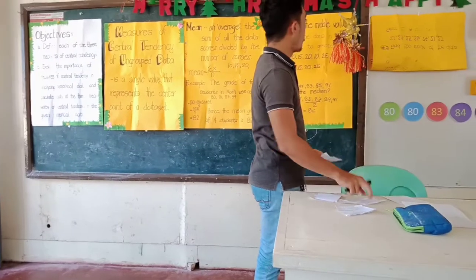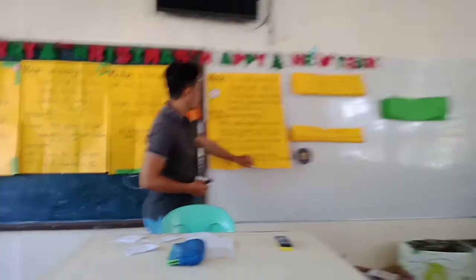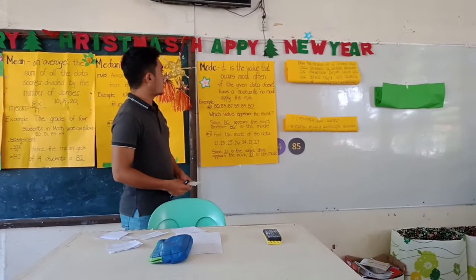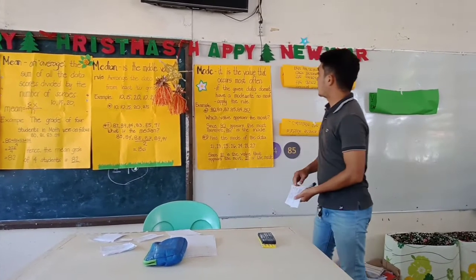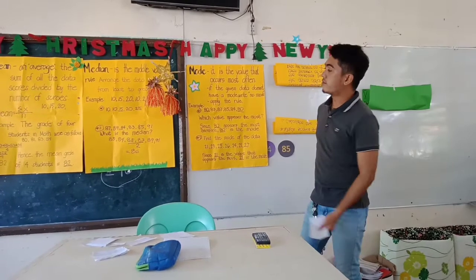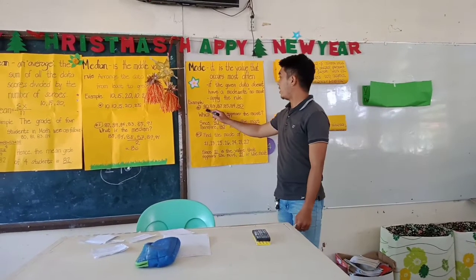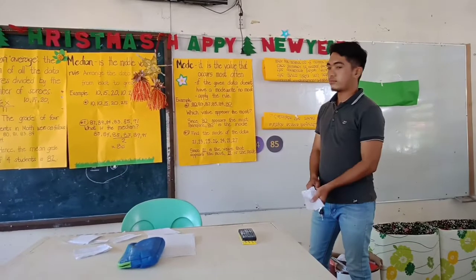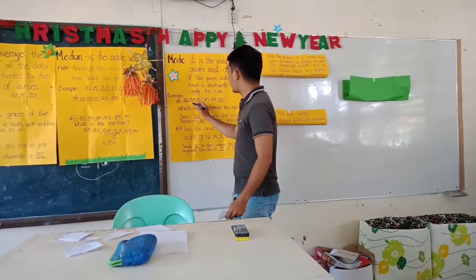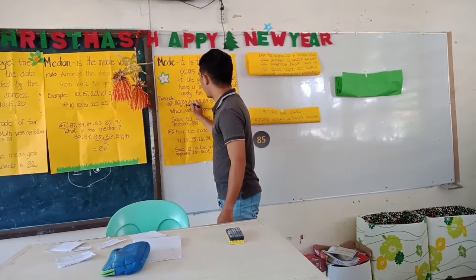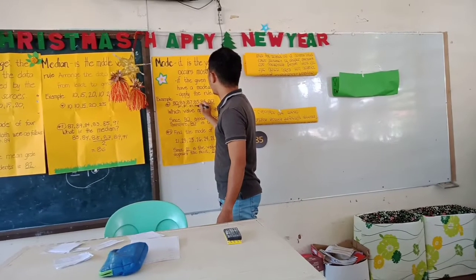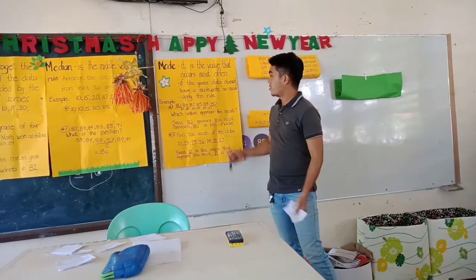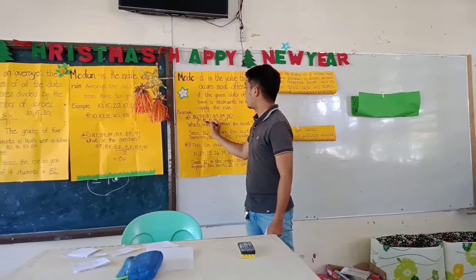Okay, let's proceed to the next — the Mode. The mode is the third measure of central tendency. It is the value that appears most often. If the given data doesn't have a mode, write 'no mode.' Also apply the rule in finding the median. Example number one: 80, 83, 87, 85. What do you think is the mode? 80. When you arrange these numbers — 80, 80, 83, 84, 85, and 87 — the value that appears most is 80.